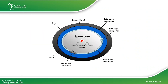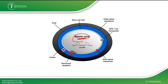To understand this, we should know the structure of the endospore. The endospore has a core at the center, a germ wall, an inner spore membrane with DNA and ion transporters, germinate receptors, and a cortex. Endospores contain four basic layers.